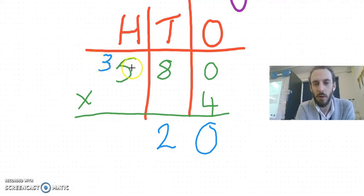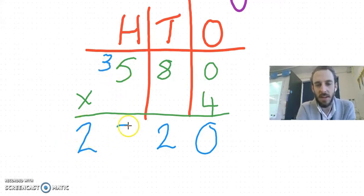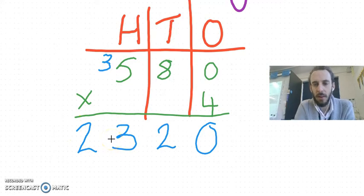When I move on to my hundreds, I do four multiplied by five hundreds, four multiplied by five is twenty, so it's twenty hundreds, add three. Twenty three hundreds. Five hundred and eighty multiplied by four is two thousand three hundred and twenty.